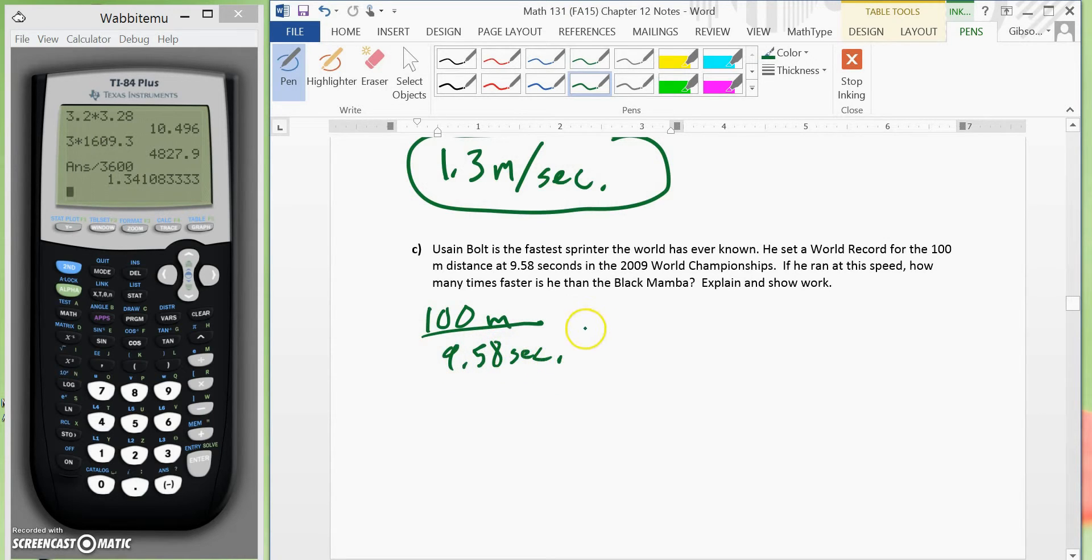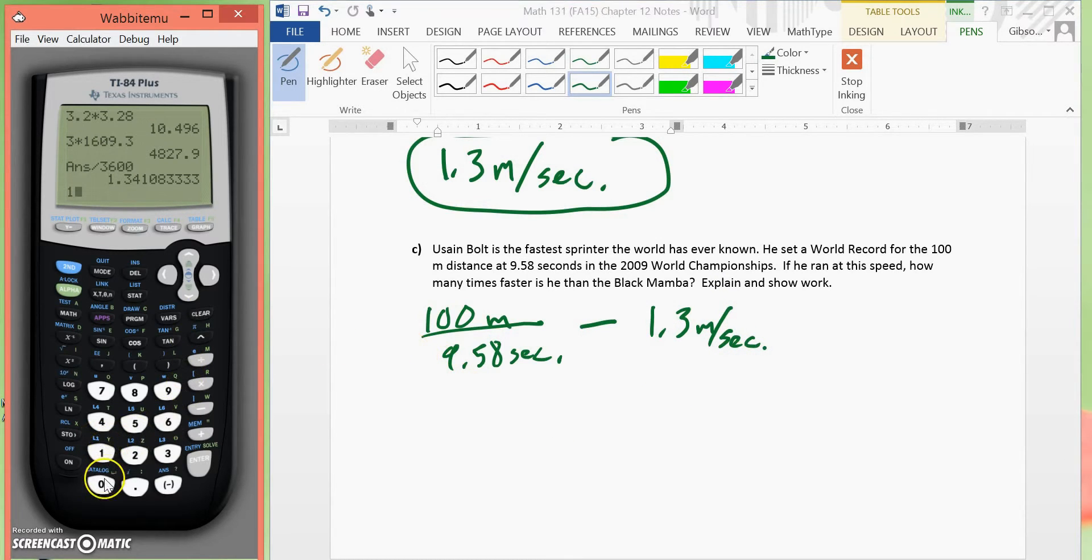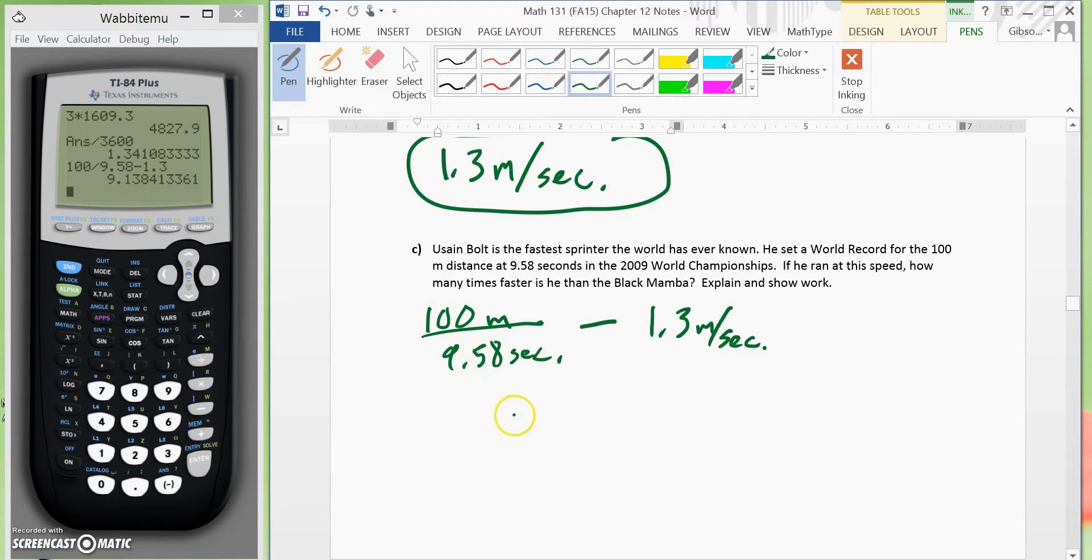Okay. So now, he ran 100 meters in 9.58 seconds. Now, we would take this and subtract the 1.3 meters per second from it. So, we could go 100 divided by 9.58 minus 1.3. That would give us, it would be 9.1 if we round that up, it would be 9.1 meters per second. He's faster than a black mamba.